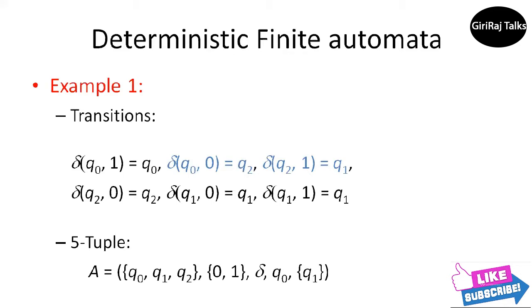Now let us consider the transitions from state q2. If we see a 0, we are no better off but no worse either — we have not seen 0,1 but 0 was the last symbol, so we want delta of q2 comma 0 equals q2. If we are in state q2 and we see a 1, we now know there is a 0 followed by a 1. We go to accepting state q1, corresponding to condition 1 — that is, delta of q2 comma 1 equals q1.